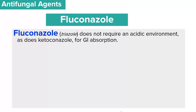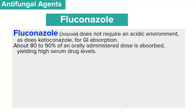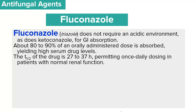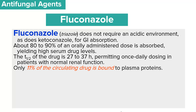Fluconazole is a triazole that does not require an acidic environment, as does ketoconazole, for gastrointestinal absorption. About 80 to 90 percent of the orally administered dose is absorbed, yielding high serum drug levels — fluconazole has good oral bioavailability. The half-life of the drug is 27 to 37 hours, which permits once-daily dosing in patients with normal renal function. Only 11 percent of the circulating drug is bound to plasma proteins.